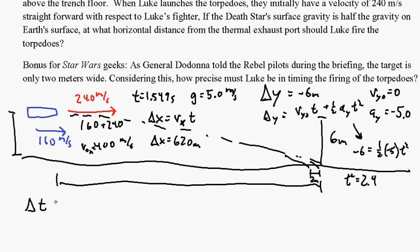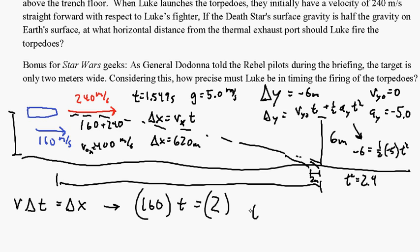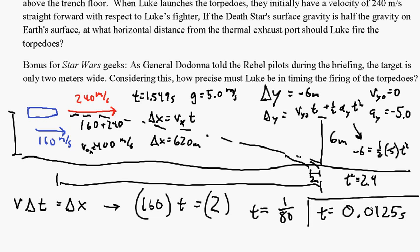Delta T — the amount of time Luke has to fire — times the velocity of the X-wing is the horizontal window he has. So: 160 times T equals 2 meters, which means T equals 1 over 80, which means T equals 0.0125 seconds. That's how precise Luke needs to be pulling the trigger, and that's why you either have to use a computer to do it, or you use the Force, like Luke did — because there's no way normal human reflexes can time things down that precisely.